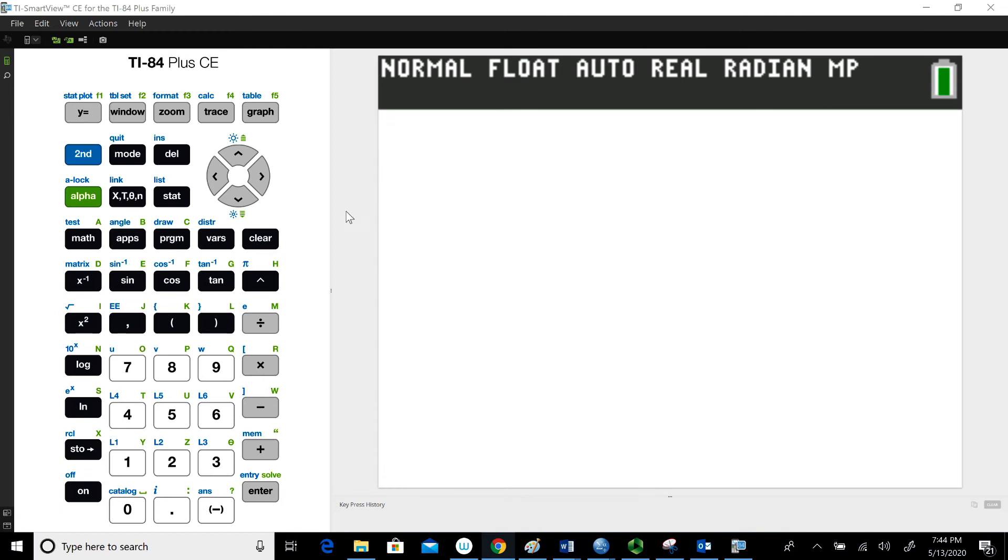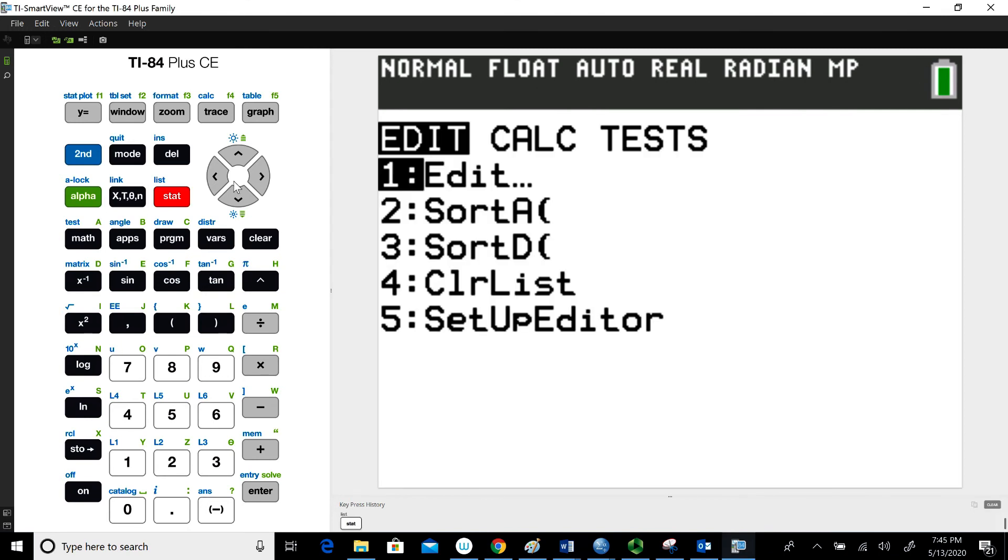One of the first things we'll have to do is enter the data into the graphing calculator. We're going to do that by going to the stats button, which is in the second row right here. You can see where my cursor is. You'll hit stats and open that up.